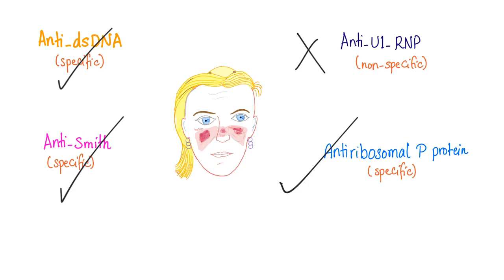Which one correlates with lupus nephritis? Anti-double-stranded DNA. Which one correlates with lupus vasculitis? Anti-double-stranded DNA. Which one correlates with liver disease? Anti-ribosomal P-protein. Which one correlates with psychosis, depression, or cognitive impairment? Anti-ribosomal P-protein.